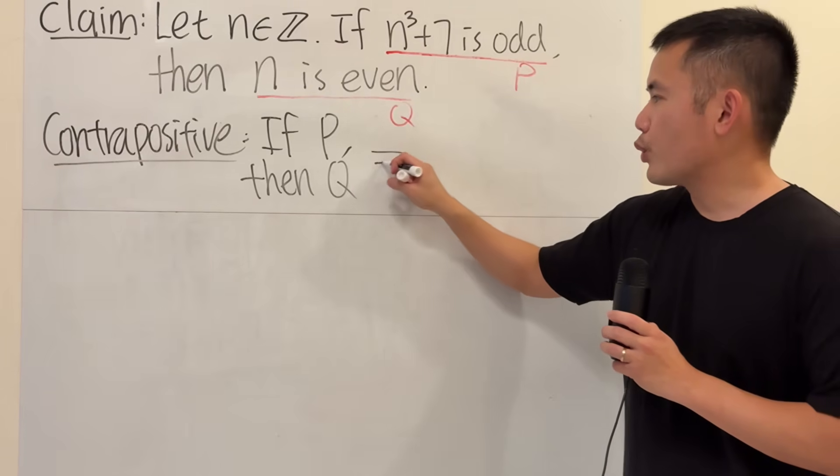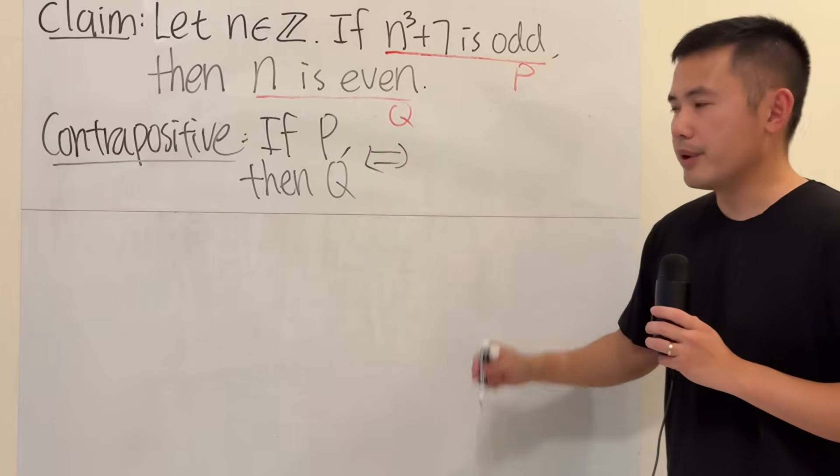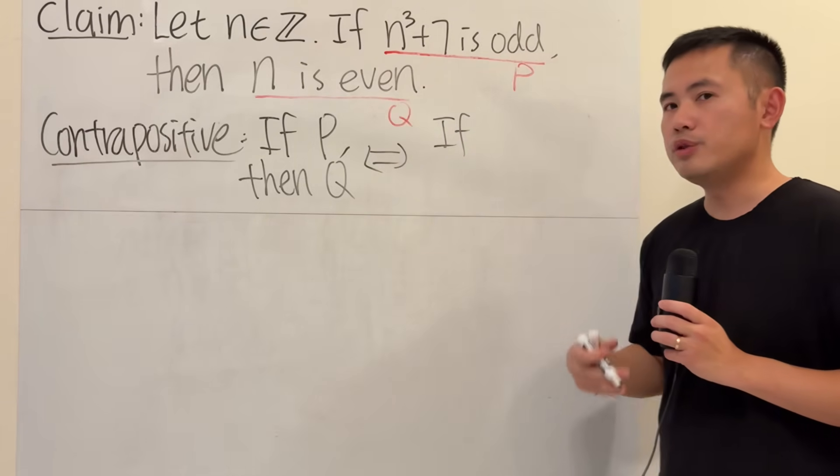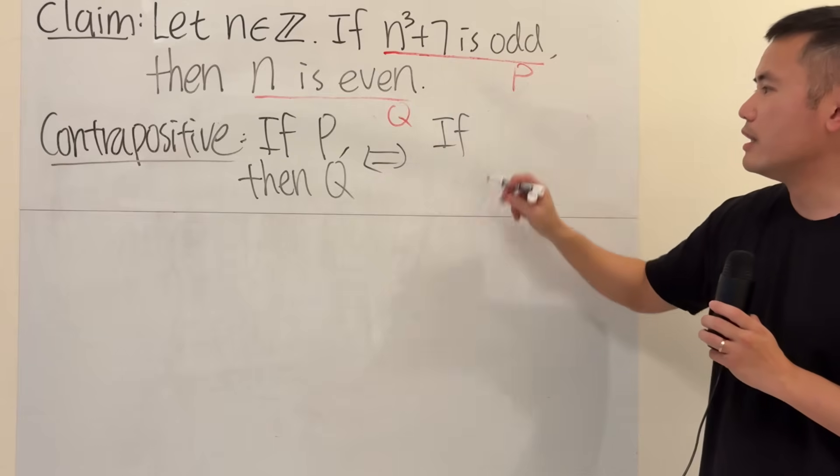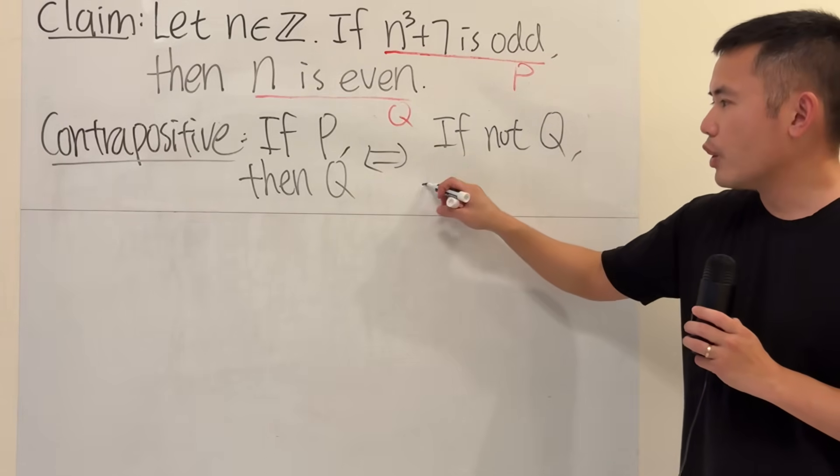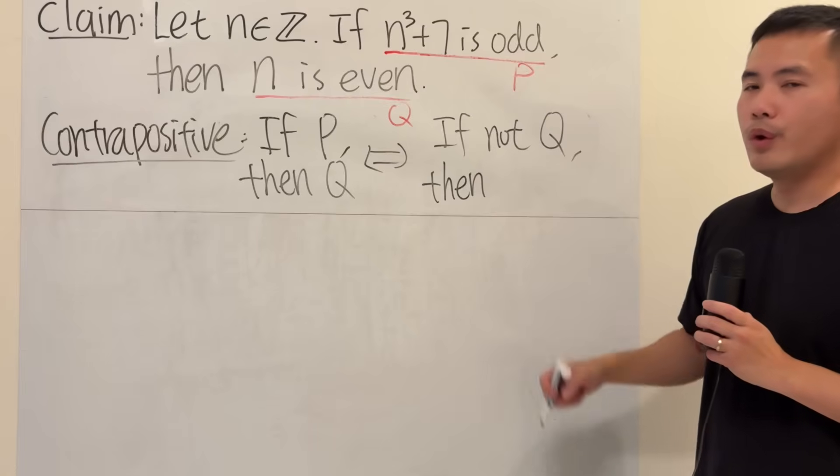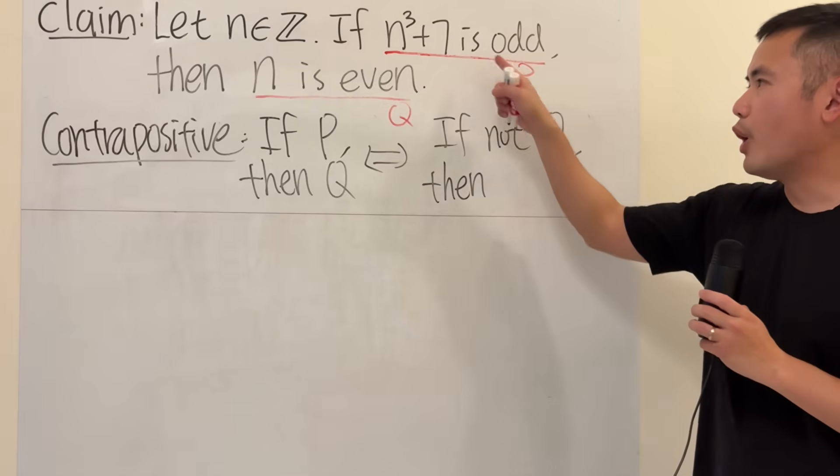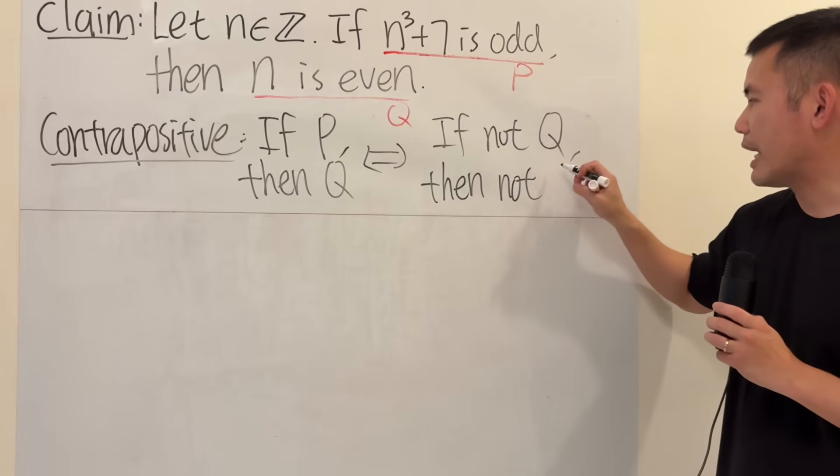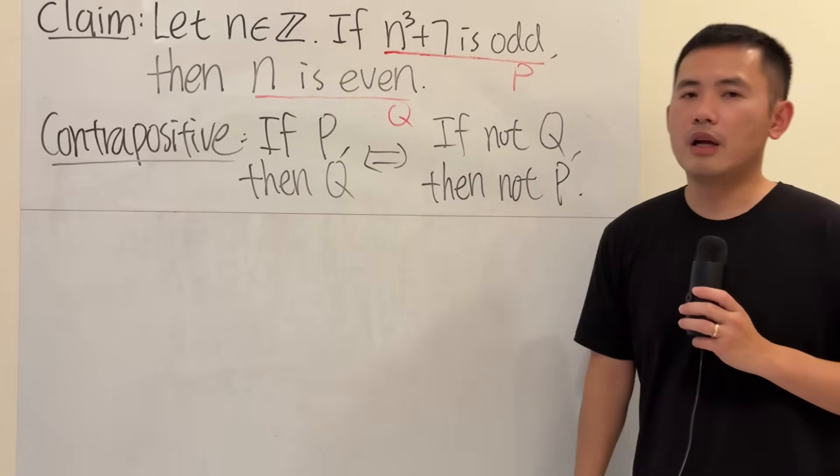Now, this is equivalent to the following. Suppose today we do not have this conclusion, which is going to be the negation of that. So we say, if not q, then what's going to happen is that we wouldn't have the original condition either. So, we will have not p. They are logically equivalent.